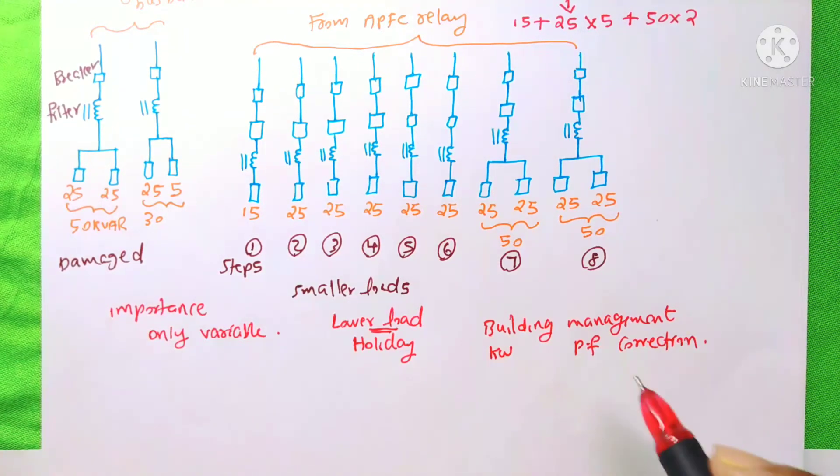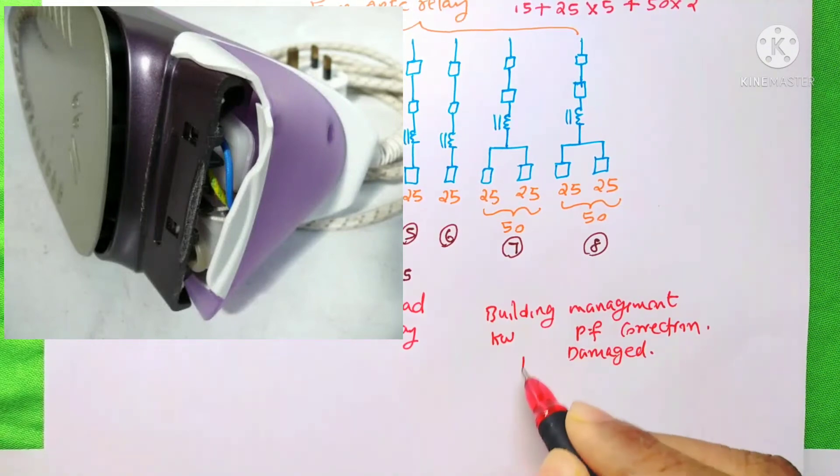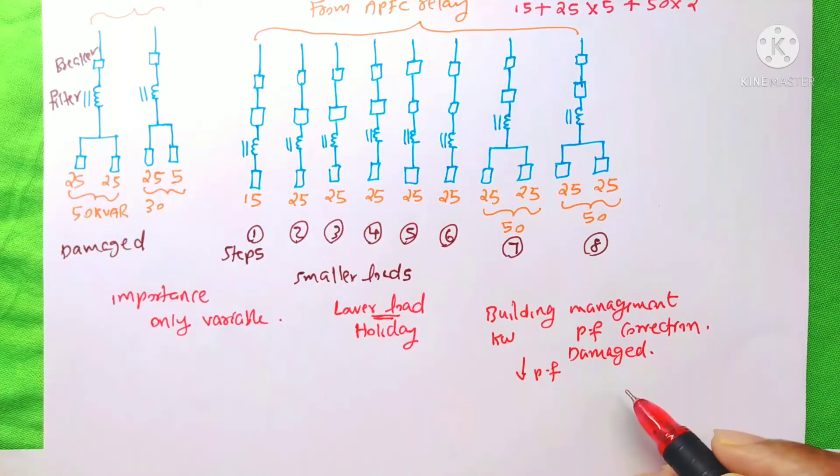their appliances will be damaged easily. And due to the lower power factor, the current will be very high. That means the current consumption of the loads will be very high.